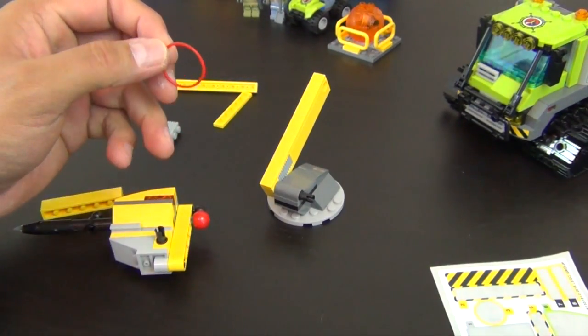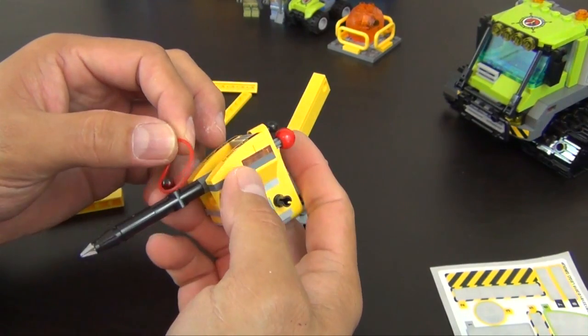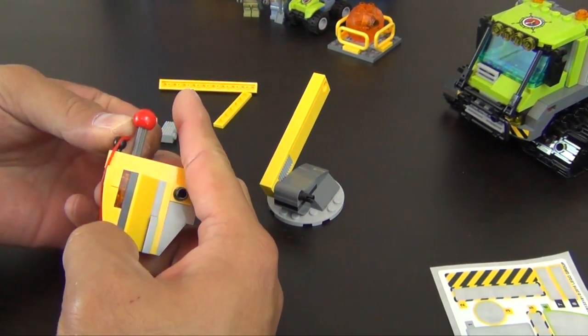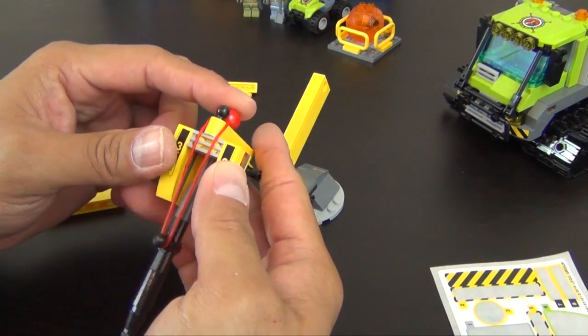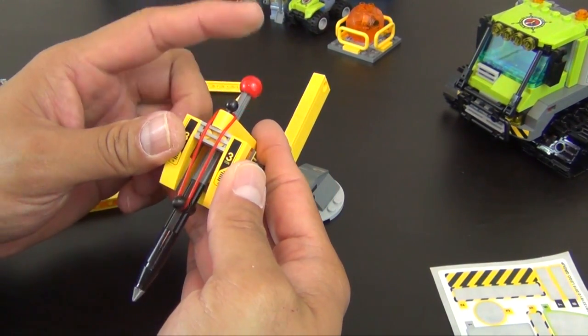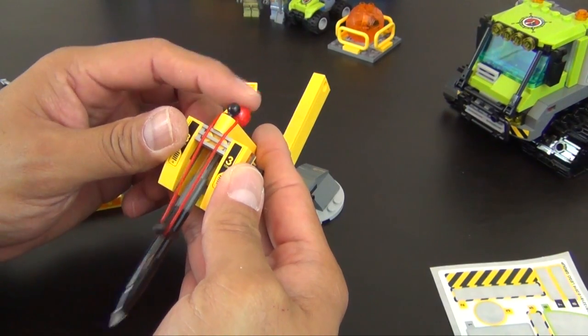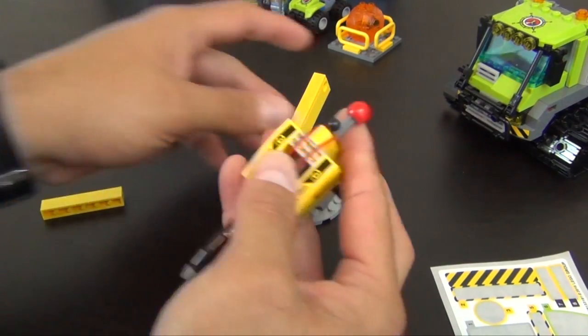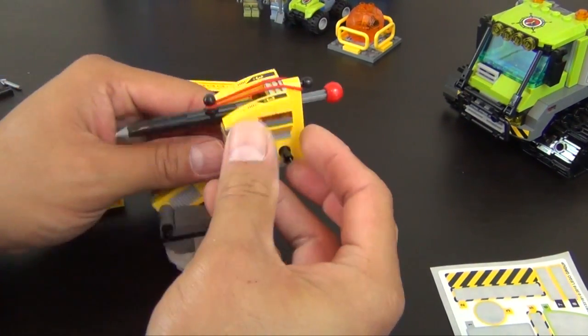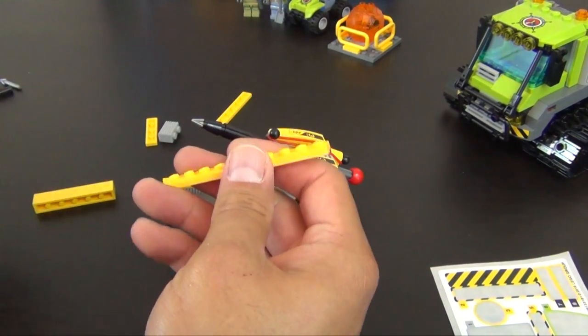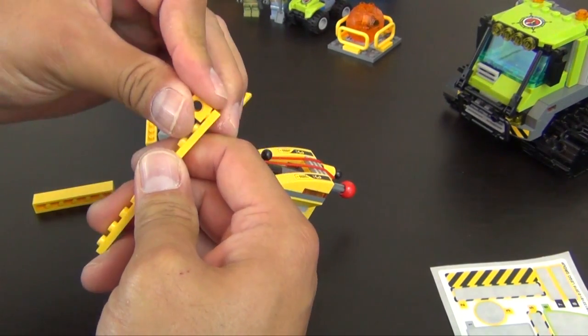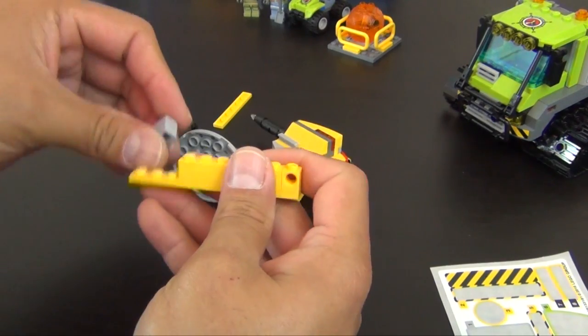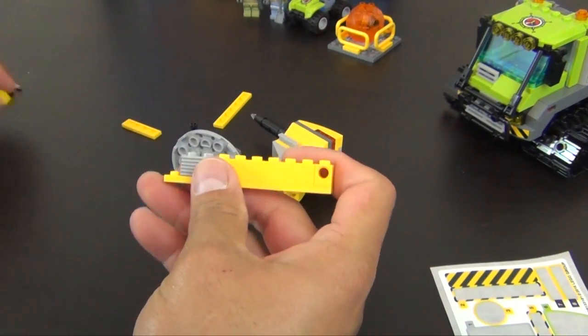We wrap one end around this toe ball and then bring it up to the top and wrap the other end around. So you can see when I push down, the rubber band pulls it back to its beginning position. So we will attach the piece there. A couple more parts, which should be close to being done.